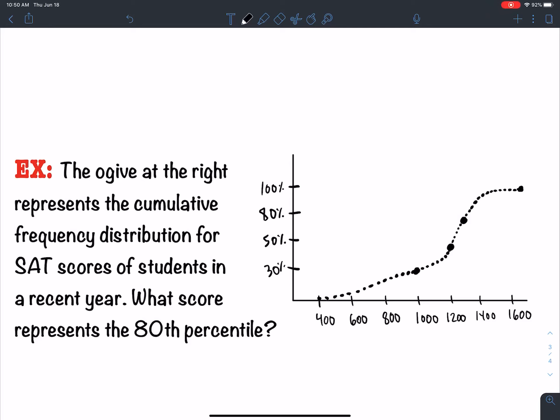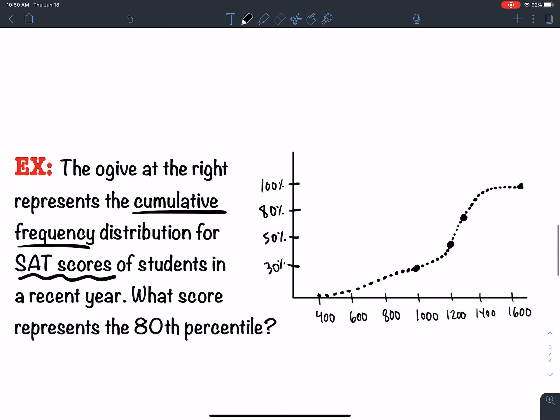In this video, we've got a graph of an OGIV to the right. It represents the cumulative frequency distribution for SAT scores of students in a recent year. The question is, what score represents the 80th percentile?